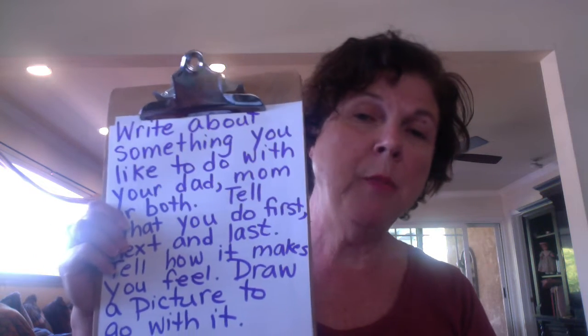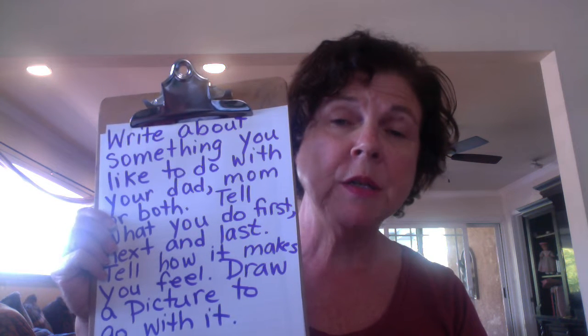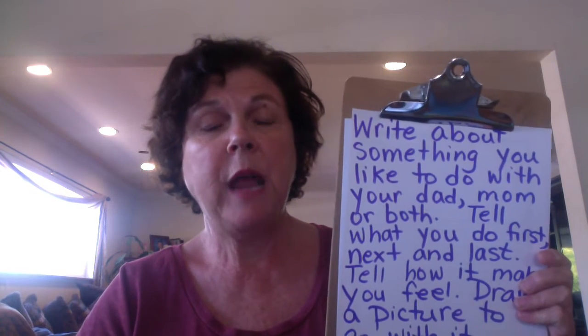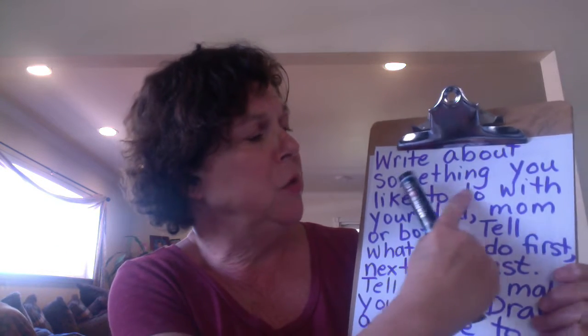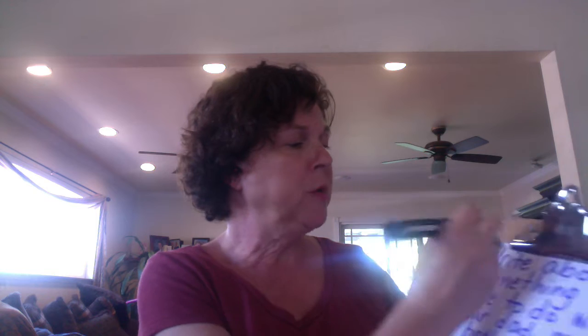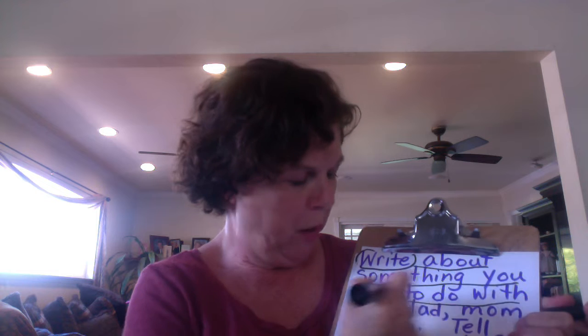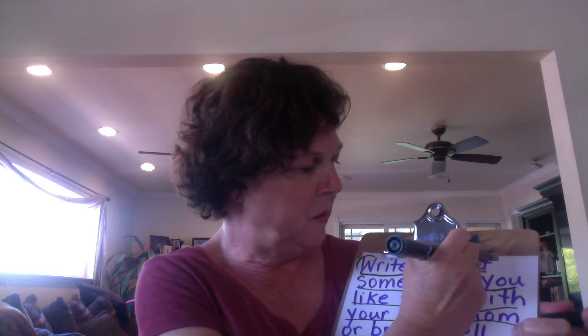Here's the writing prompt, and it's always a wise idea with a writing prompt to take it apart and look at all the pieces of what we need to be sure to do. So what we do is look for the action word — the verb — first. It says 'write about something you like to do with your dad, mom, or both.' So 'write' is our action word, our verb. I'm going to circle that and underline the rest of the sentence so we know what we're going to write about. I'm going to put a one above that because that's the first thing we need to do.